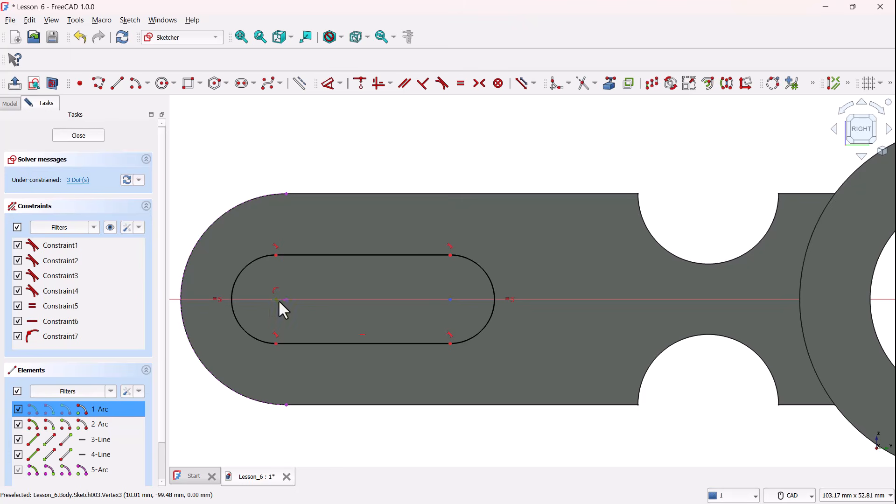Now, hold control. Select both center points, the one from the slot and the projected one. Then, apply the coincident constraint to lock them together.